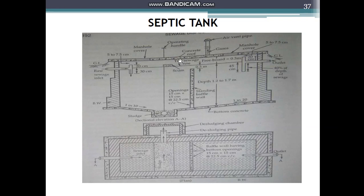The cover acts like a manhole cover, and sometimes steps are provided for manual inspection. Looking at the diagram, we can see the inlet chamber, the outlet chamber, the sludge deposition area at the bottom, and a slope provided so that sludge accumulates easily. The plan view is also shown.